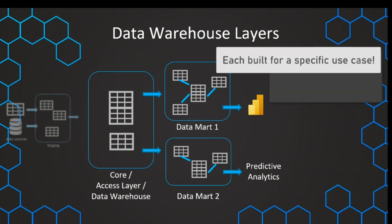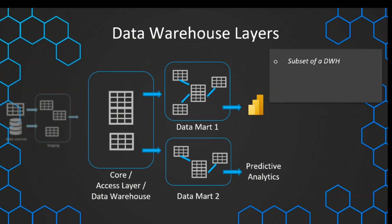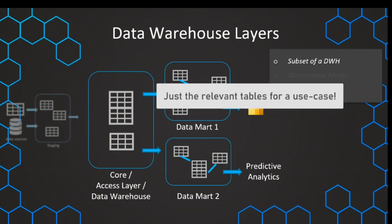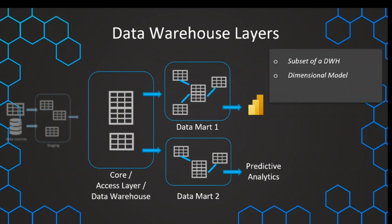This additional layer of data marts is nothing but a subset of our data warehouse, meaning our core layer. The data in data marts is modeled in a dimensional way, so we have fact tables in the middle and dimension tables around them. We'll talk about that in more detail later on.